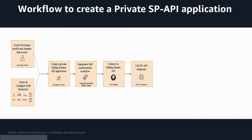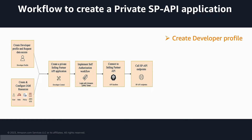In this video, since we will be focusing on private applications, let's look at the workflow for creating a private Selling Partner API application. The first step is to create a developer profile. In SP API, you only need to register one developer account under a seller or vendor central account that will be able to access data across multiple regions to support all of your selling accounts. Create a developer profile on your selling account if you don't already have one.